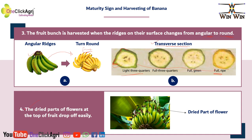Fourth sign: the dried part of the flower at the tip of the fruit gets off easily. You will find here the parts present on the fruit or fingers — it will drop off or get off easily from the fruit.